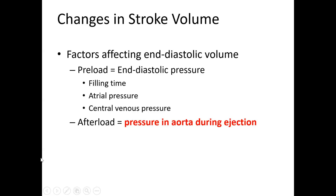Afterload is also a factor — it is the pressure in the aorta during ejection, essentially the resistance that blood leaving the ventricle must work against. If someone has narrowed vessels or high blood pressure, there is a lot of pressure in the distal vessels, and the ventricle has to work even harder to pump blood against that resistance. An increase in afterload will also affect end diastolic volume.